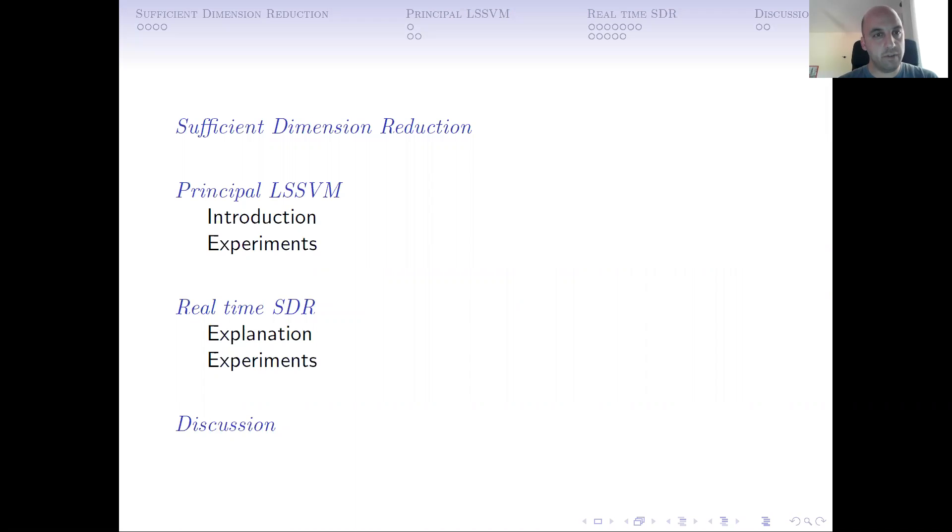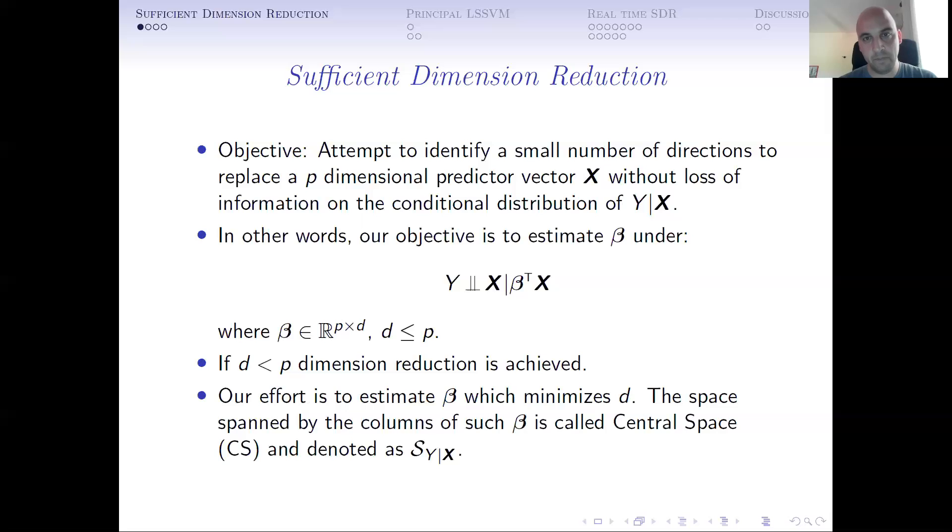A brief introduction on sufficient-dimensional reduction, what is principal-least-squared support vector machines and how we can use it for real-time sufficient-dimensional reduction. In sufficient-dimensional reduction, we are trying to identify a small number of directions to replace the p-dimensional predictor vector x without losing information on the conditional distribution of y given x.